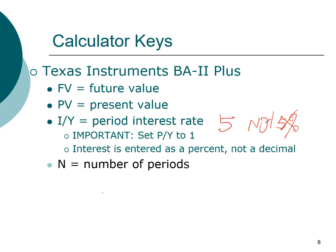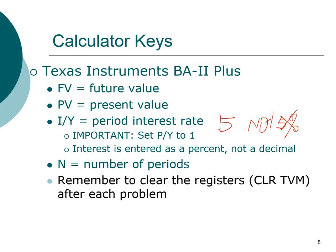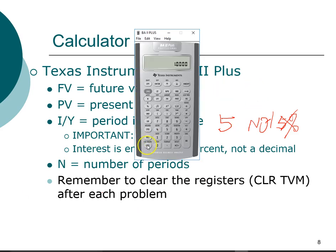N stands for the number of periods. At the end of each problem, you need to clear the TVM registers — this is different from just pressing the Clear key. Pressing Clear resets the display to zero but does not clear the numbers entered into the TVM registry. To clear TVM, you press Second function and then press the CLR TVM register. All values in the time value of money registers will then be cleared.